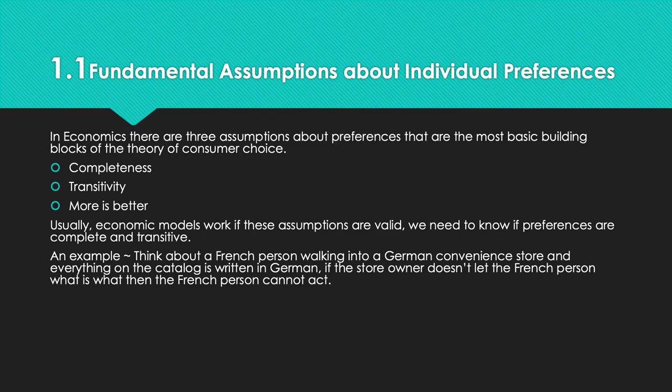An example that illustrates why these assumptions matter: think about a French person who walks into a German convenience store and opens up the catalog, but everything is written in German. If the store owner doesn't explain what's on the catalog, then the French person cannot act based on the theory of consumer choice. That's what the assumptions of individual preferences are all about.